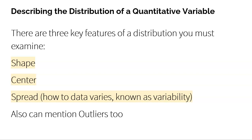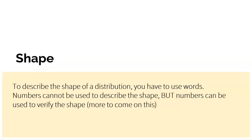What's the distribution of a variable? What values the variable takes on and how often it takes on those values. There is one more thing you can mention as well, and that would be outliers, if there are any. But let's continue to talk about shape.